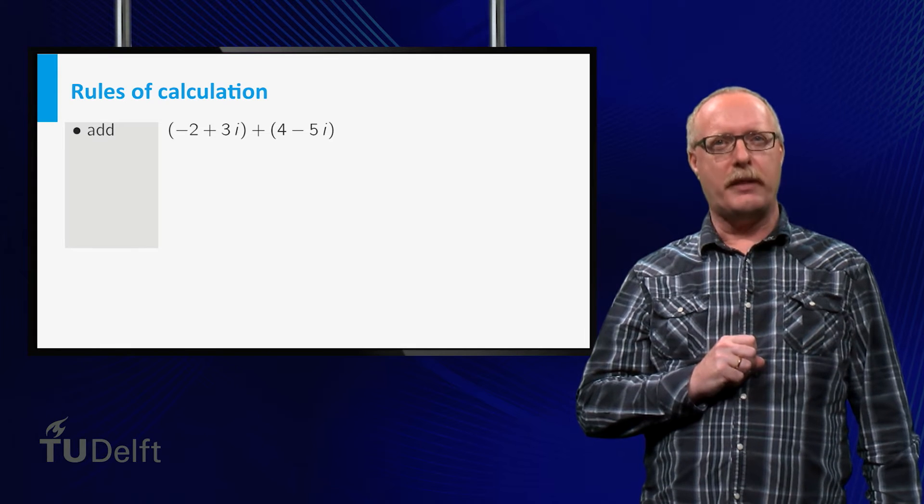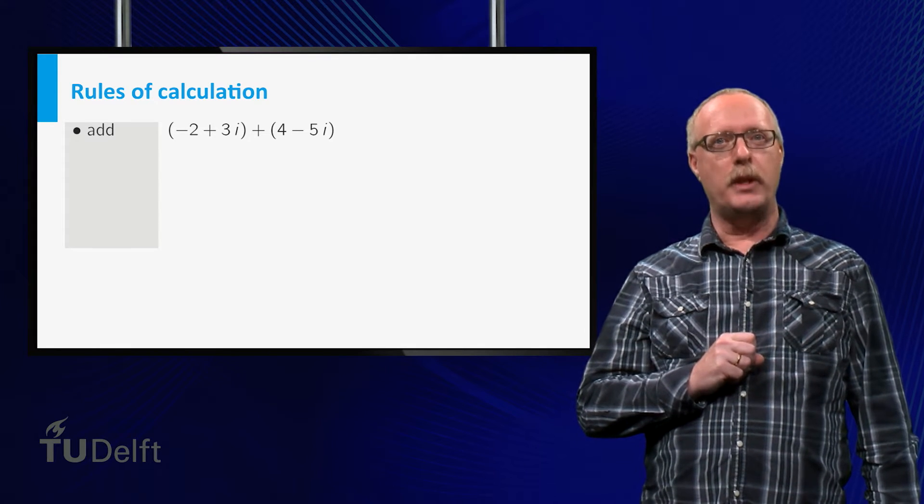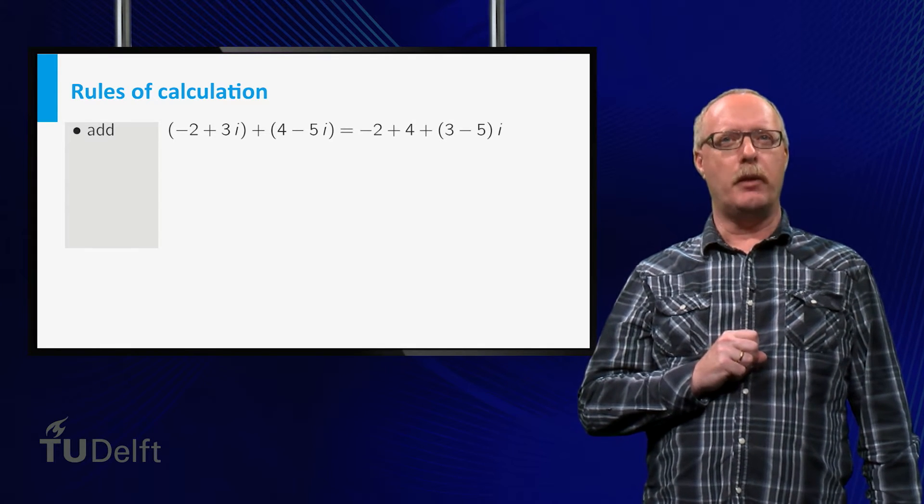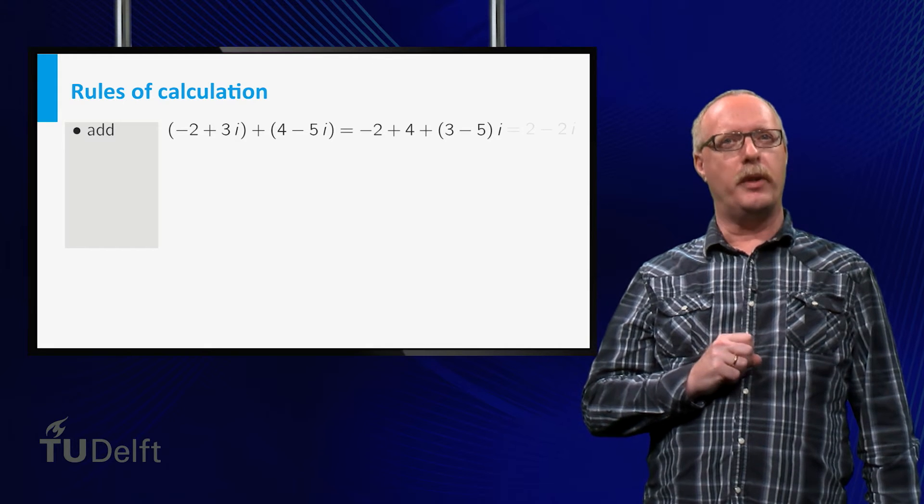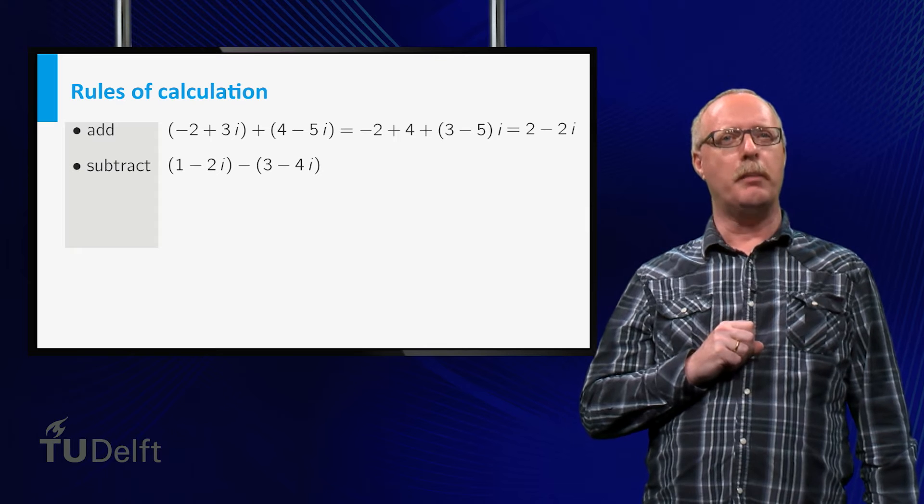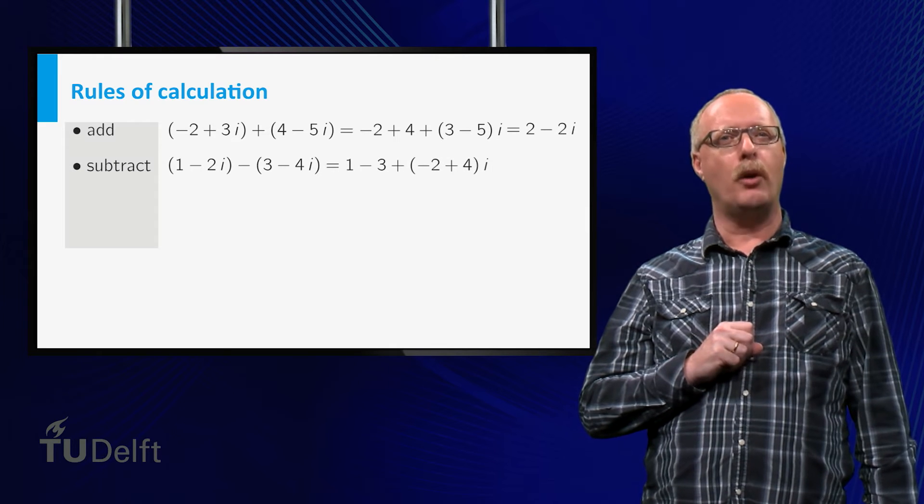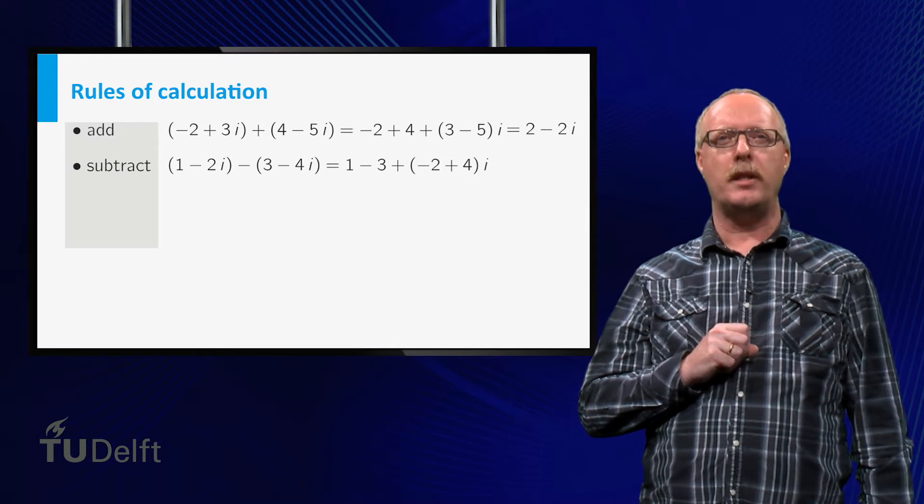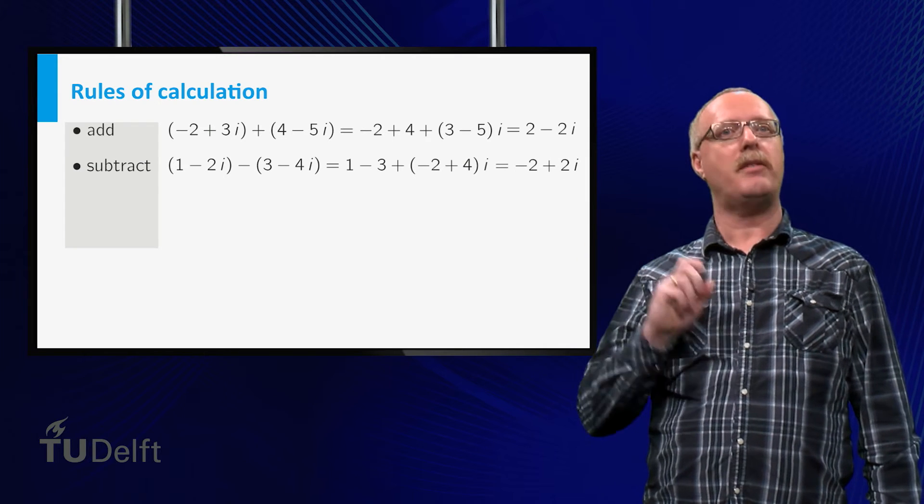If we add two complex numbers, we just add the real part and the imaginary part, and we end up with a new complex number. Subtraction is similar. We subtract both the real and the imaginary parts to obtain a new complex number.